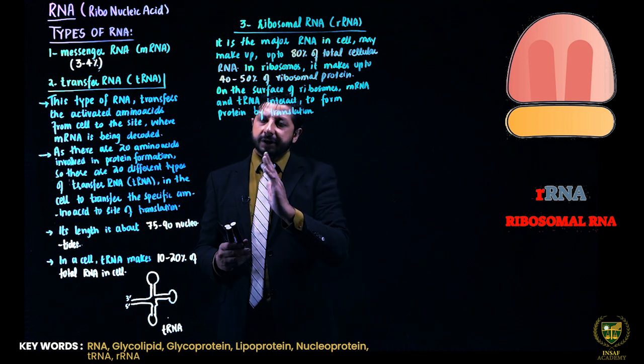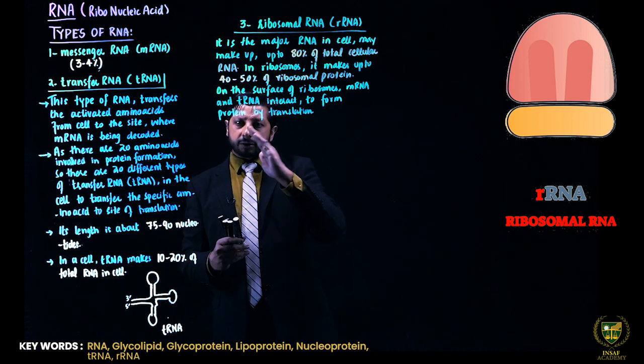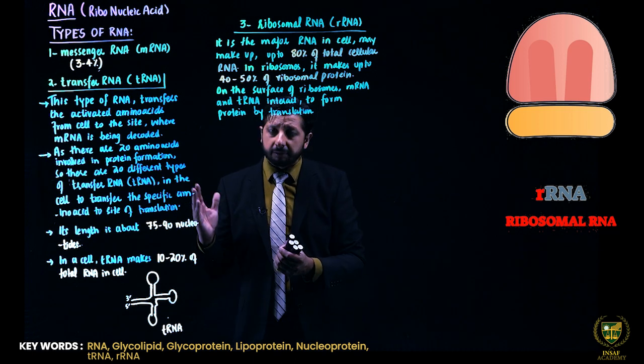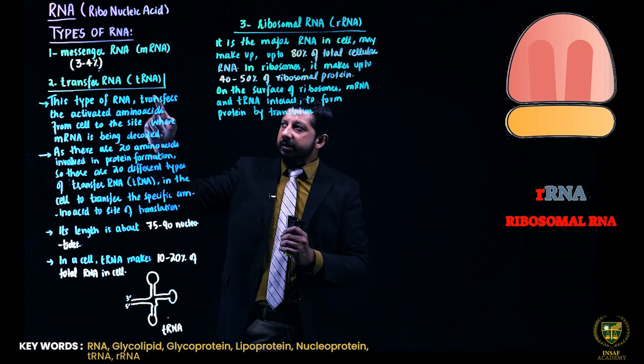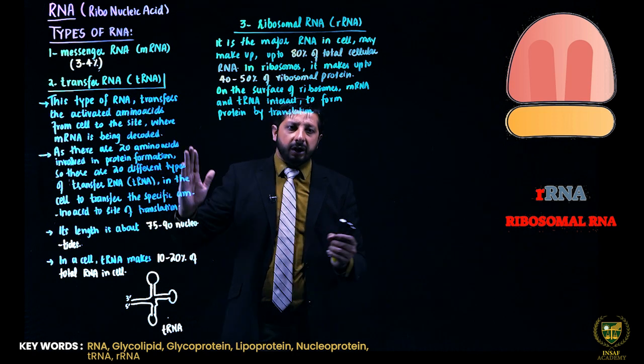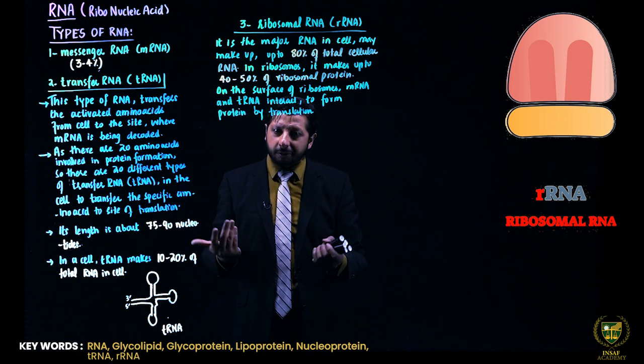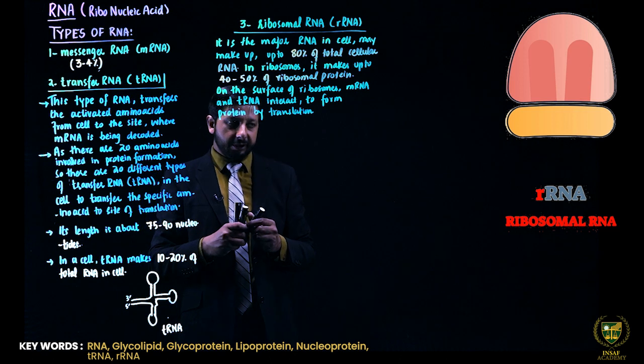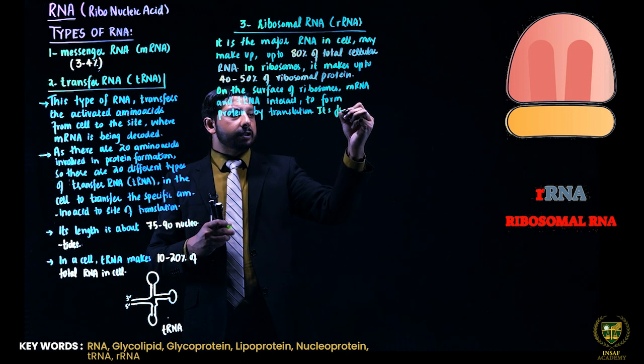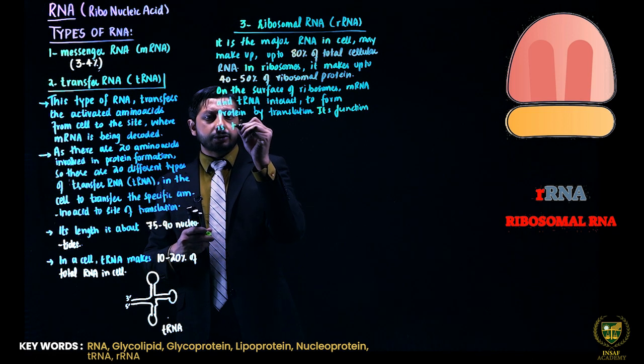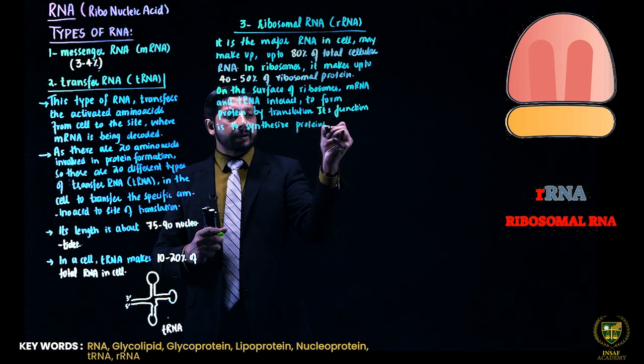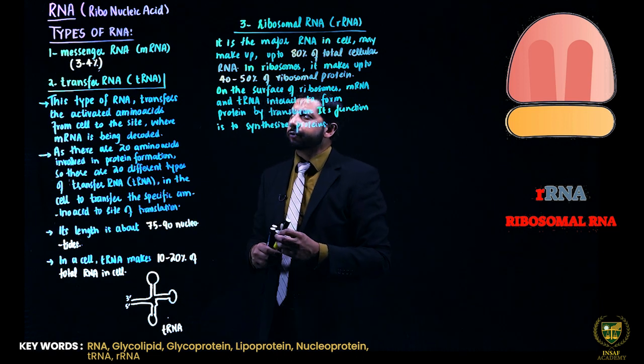Inshallah in second year, chapter number 20, we will have details about replication, transcription, translation, how proteins are formed in the cell. To create proteins, there are 3 RNA types. If there is one missing, then the protein usually does not form. If there is no messenger RNA code, then how will the translation be? If there is no transfer RNA, then who will transfer the amino acids? And if there is no ribosomal RNA, then there is no ribosome. So its function is to synthesize proteins by the process of translation. So these are the 3 types of RNA.